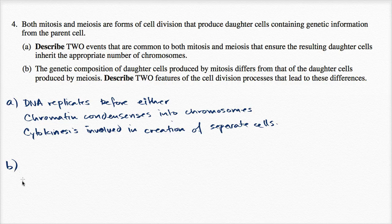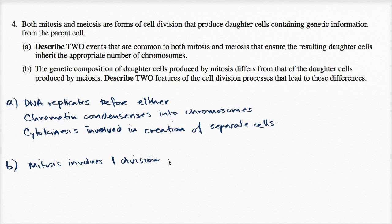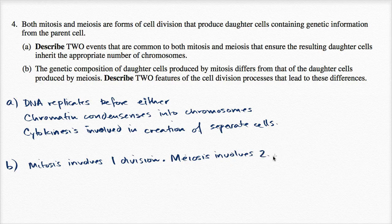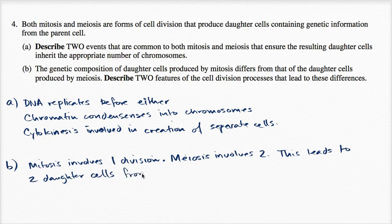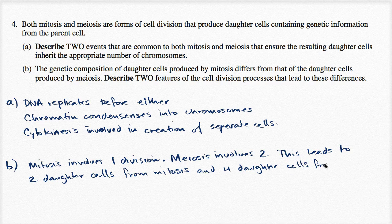Maybe the most obvious difference: mitosis involves one division, while meiosis involves two. This leads to two daughter cells from mitosis and four daughter cells from meiosis. That's a pretty big difference between the two.